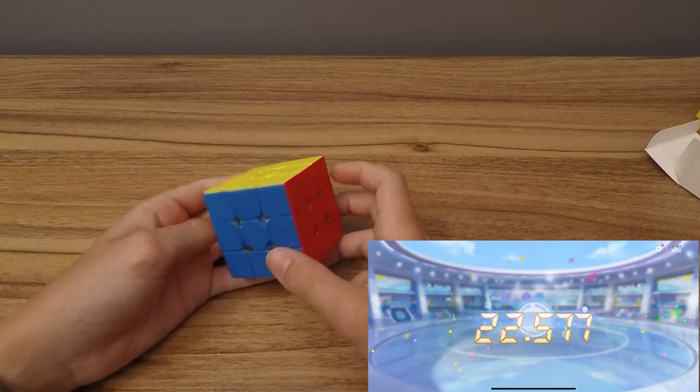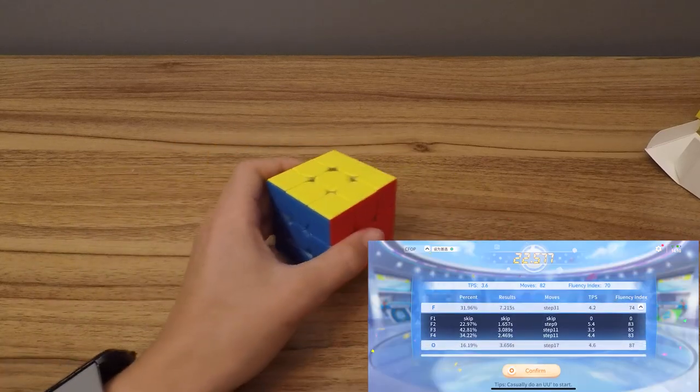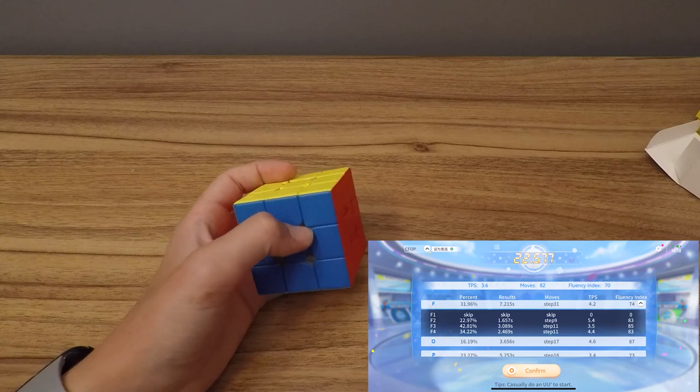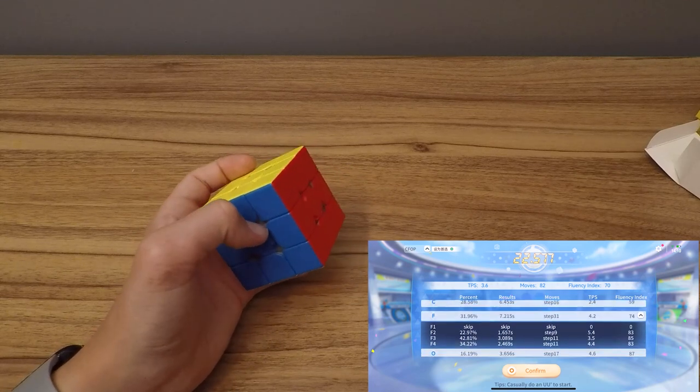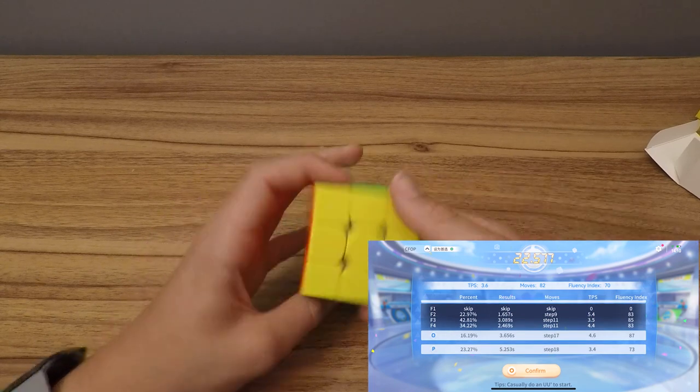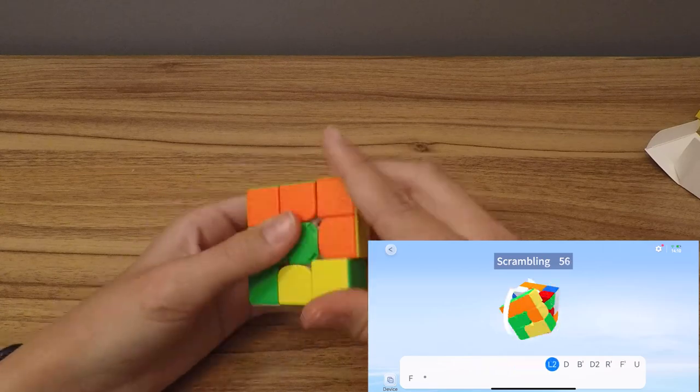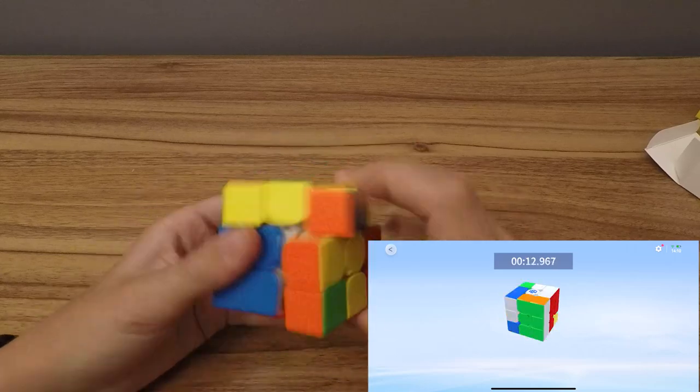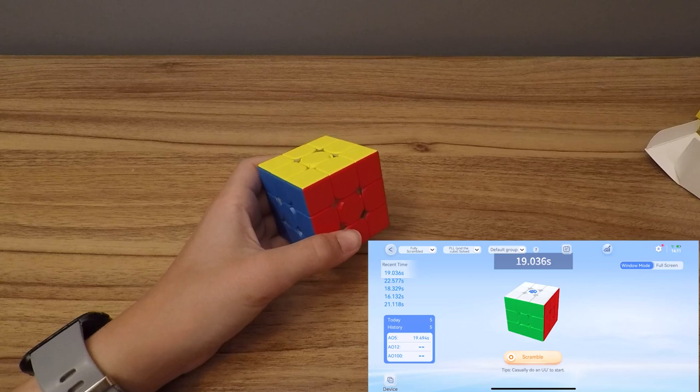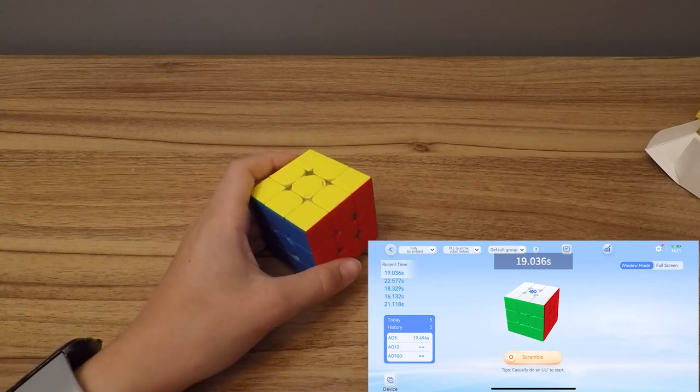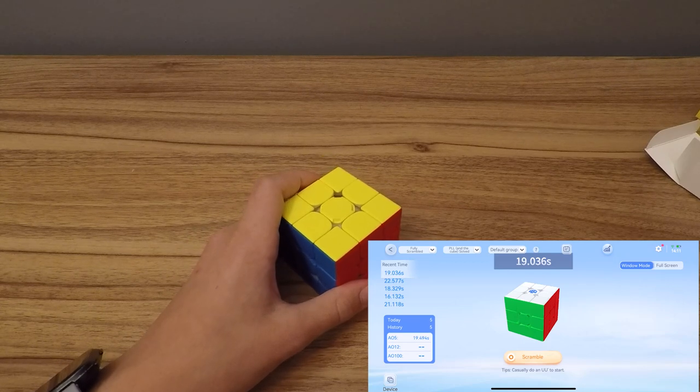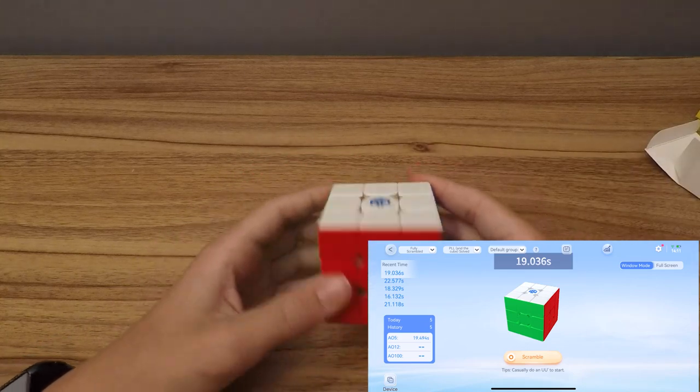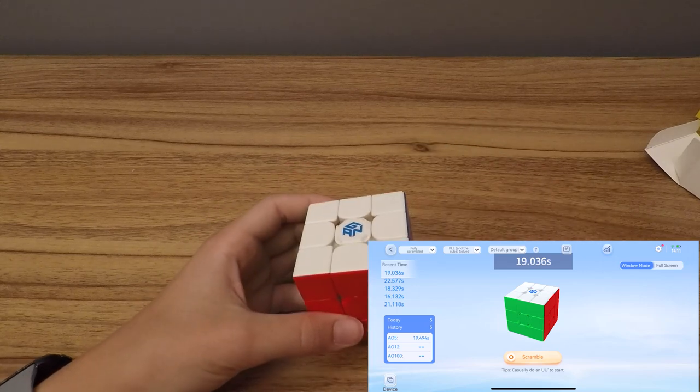Bit of a block up there. It looks like I did do my first F2L pair before my last cross edge because I wanted to preserve it. And it looks like it says I got a skip. That's cool. So I guess it considers it an X-cross maybe. So let's just do that again. My average of 5 is 19.494, which is a little bit more than my average, probably because I'm not exactly used to the turning of this cube and whatnot. I'd say that's all for the timer.